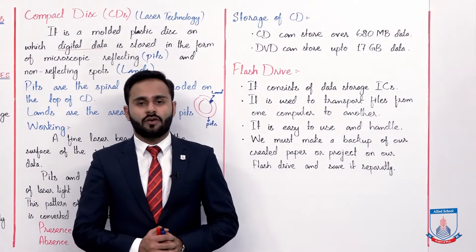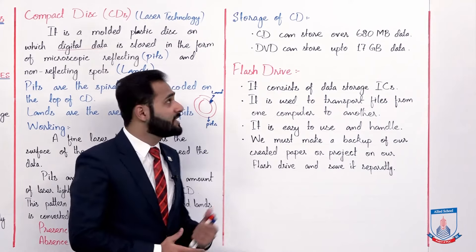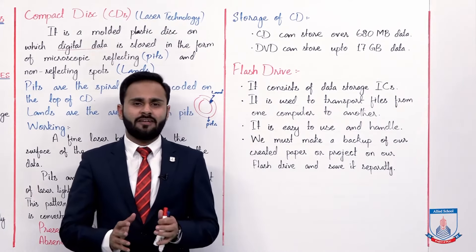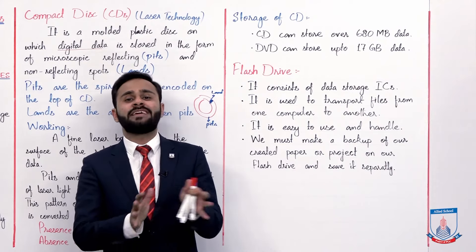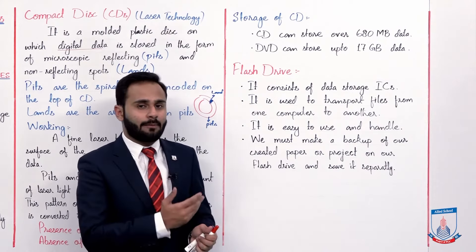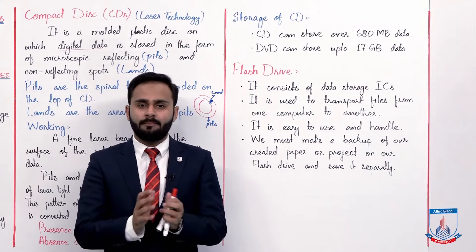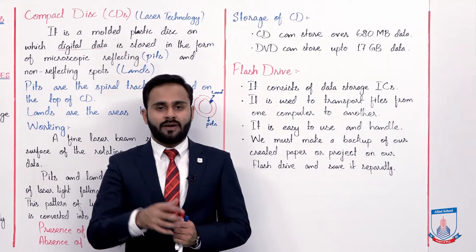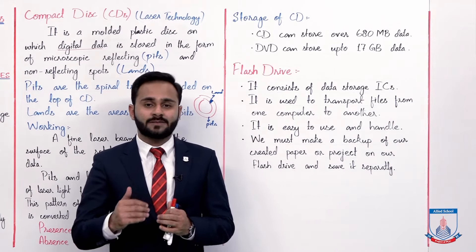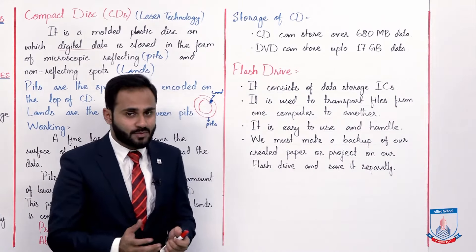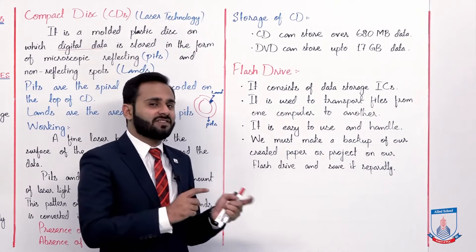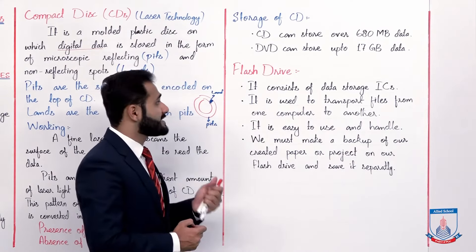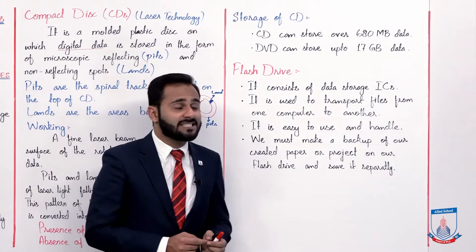CD ki storage ki baat karein toh CD can store over 680 MB of data. CD ka data normally MBs mein store hota hai. Yeh bahut kam storage hai — isme aap ek limited amount of data store kar sakte hain, lekin large amount of data store nahi kar sakte, because iski capacity jo hai woh MBs mein hai jo bahut small hai.